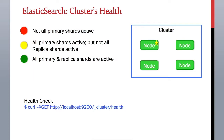The other status is yellow, which means your primary shards are active but not all your replica shards are active. This means that some of your primary shards do not have any backups, so if a primary fails, you will have an issue such as losing data.